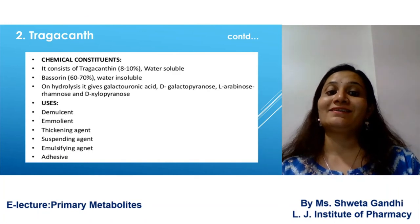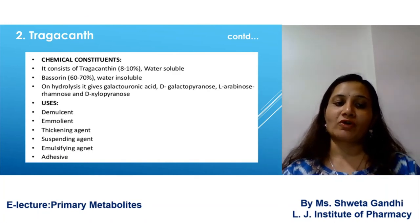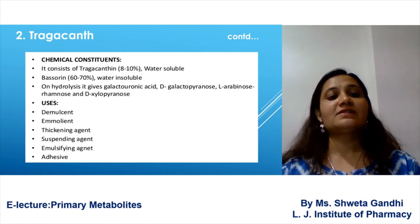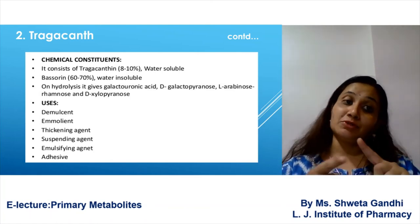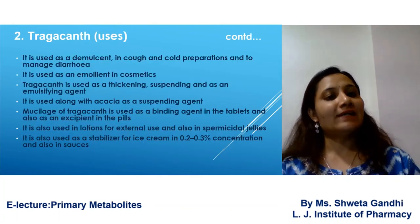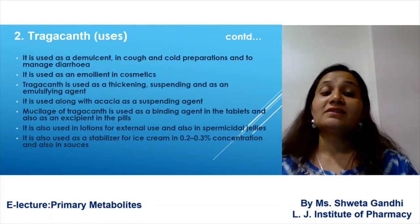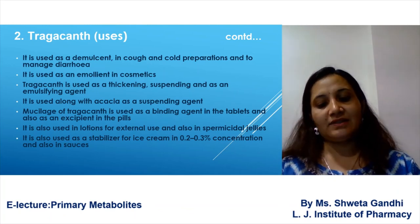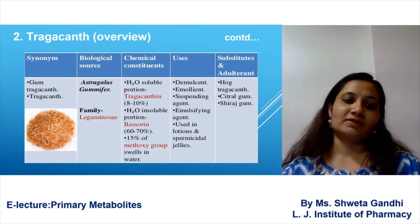The chemical constituent of tragacanth is tragacanthin, which is 8 to 10% and should be water soluble. The basic uses of tragacanth are as an emulsifier, emollient, thickening agent, suspending agent, and emulsifying agent. It is also used as a stabilizer in ice creams. This is the general overview for tragacanth.